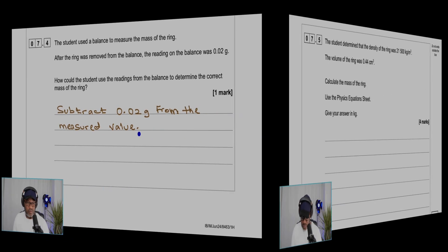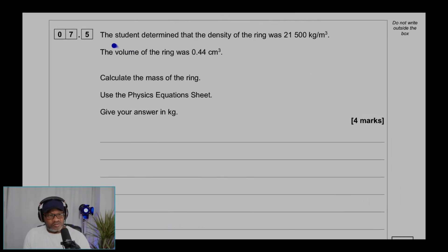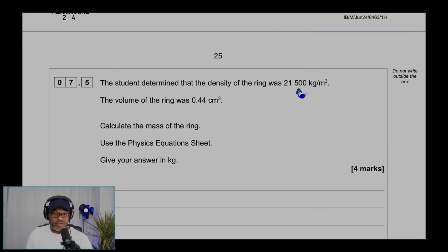Question 7.5: The student determined the density of the ring was 21,500 kilograms per meter cube. The volume of the ring was 0.44 centimeter cube. Calculate the mass of the ring. Use the physics equations sheet. Give your answer in kilogram. Four marks. We need to remember that density, rho, equals mass over volume. The unit of mass is in kilogram and the unit of volume is meter cube here, but the volume given to us is in centimeter cube.